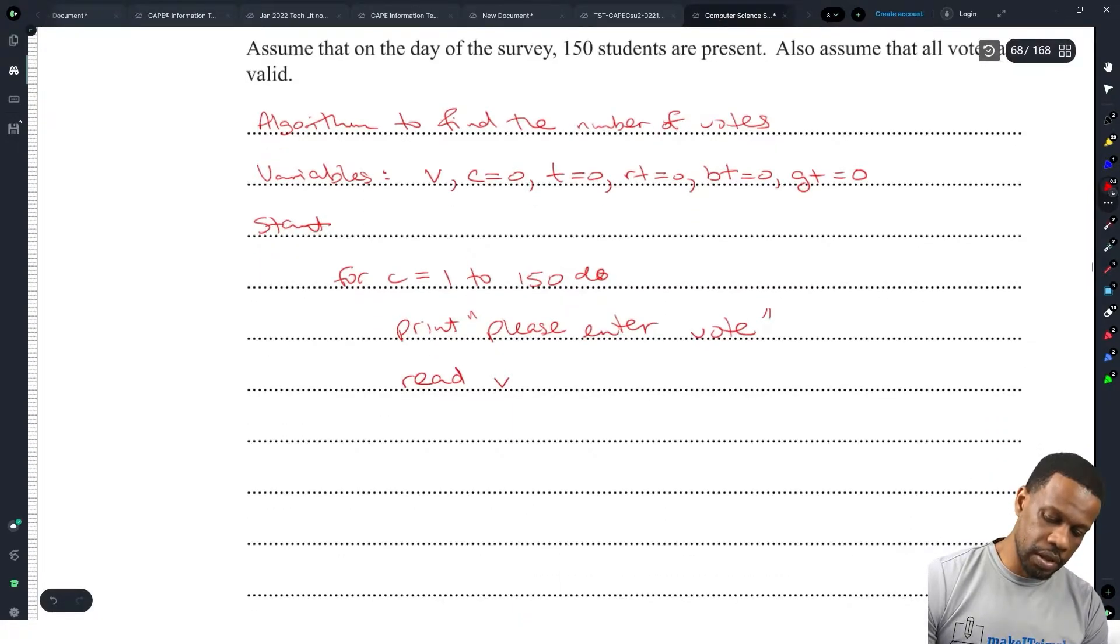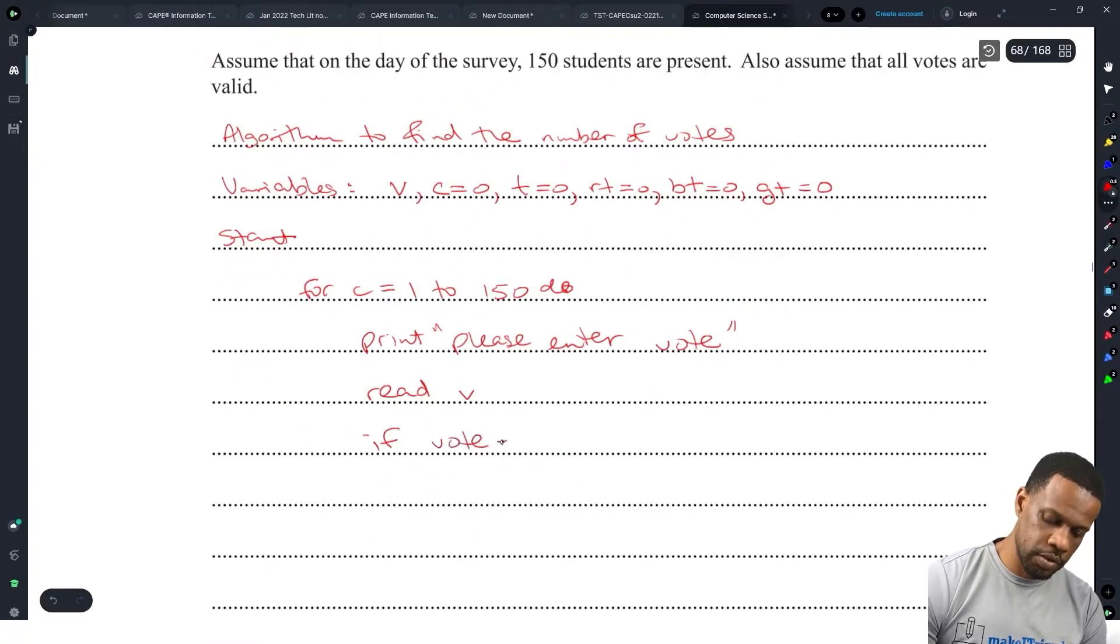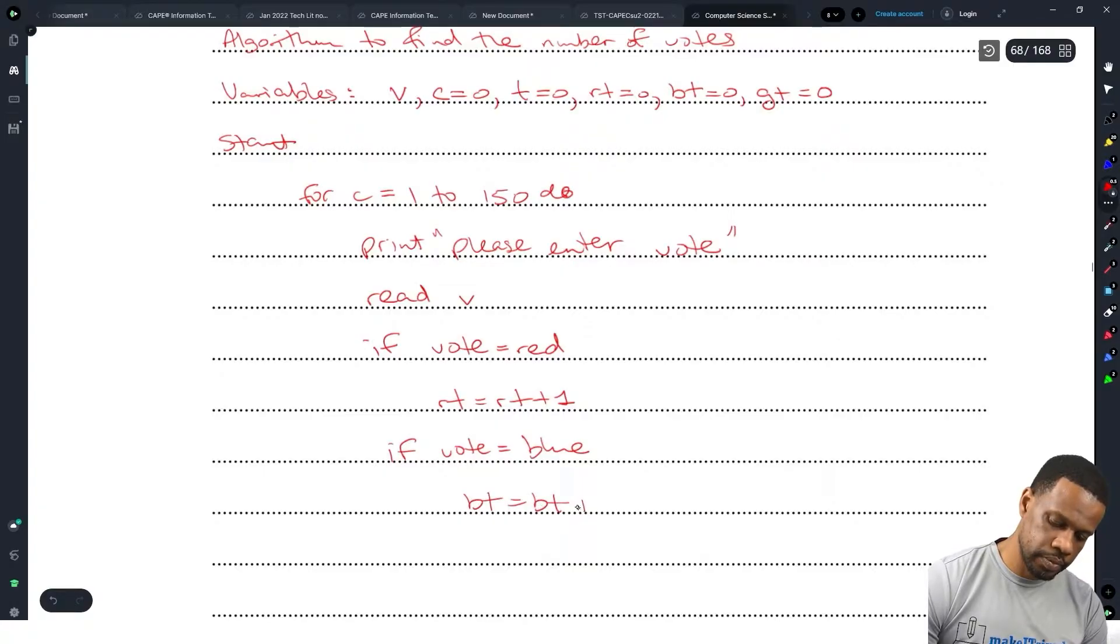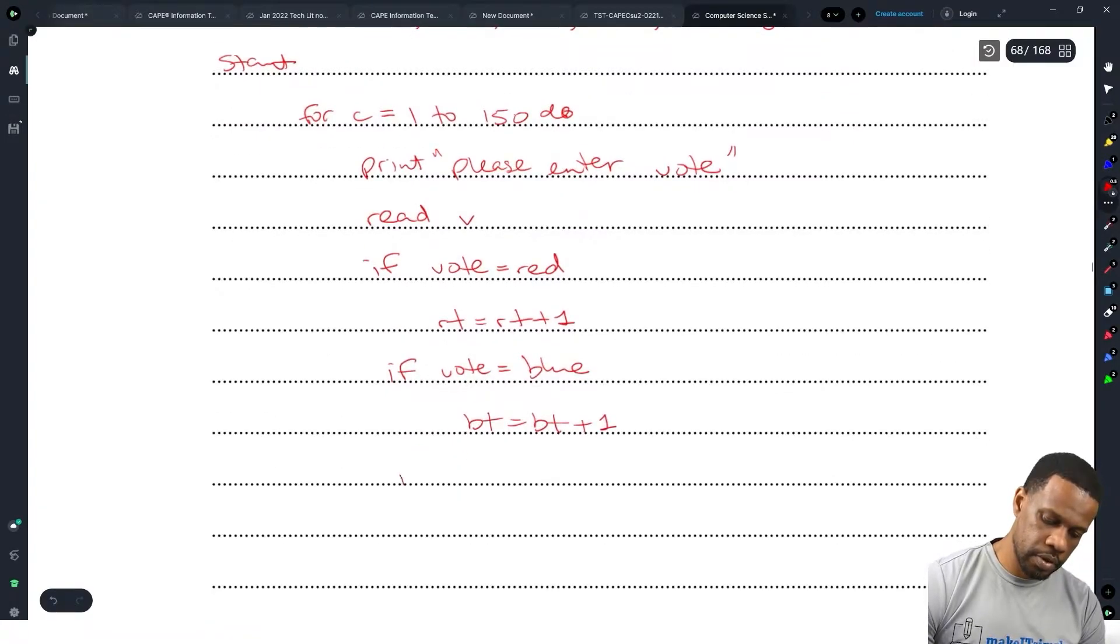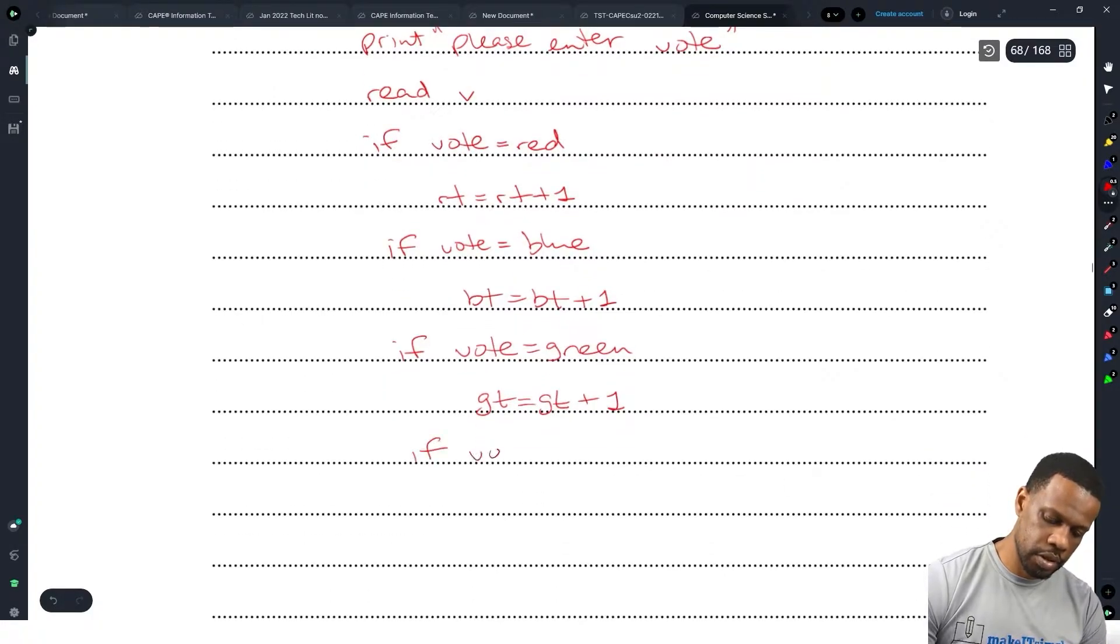So we read the vote. And then now we have to do all of the ifs. Oh, that's a lot of ifs. Okay, so if vote equals red, then RT is equal to RT plus 1. If vote is equal to blue, blue total is equal to BT plus 1. And if vote is equal to green, GT equals GT plus 1.